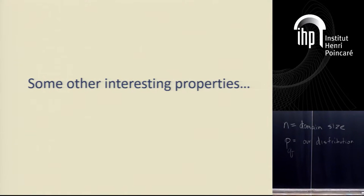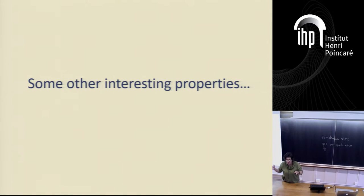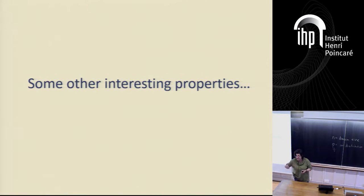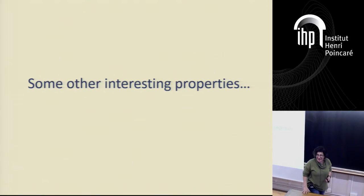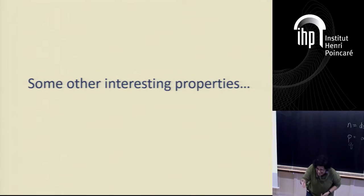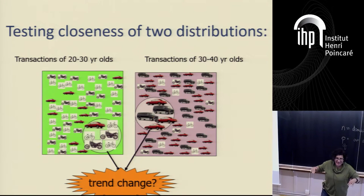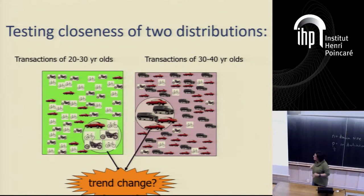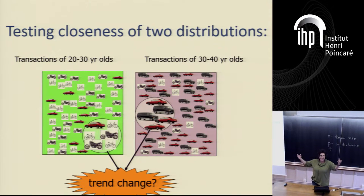I'm going to first talk about why you'd want to be interested in some of these properties, then talk about some basic techniques. Here's another problem: maybe you have two distributions. Before, we talked about testing whether a distribution is uniform. But maybe you're getting two samples from two different distributions and you want to know: is this the same distribution or are they far apart? Maybe it's sales data and you want to see if two groups of people have the same patterns or are very different — a trend change.